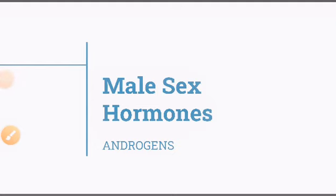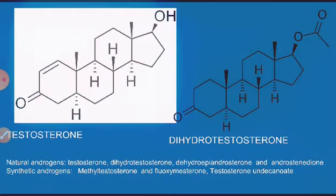Hello students, today I'll talk about the androgens, male sex hormones. There are two categories of androgens: those which are naturally produced, called natural androgens, and those which are synthesized outside the body, which we call synthetic androgens.